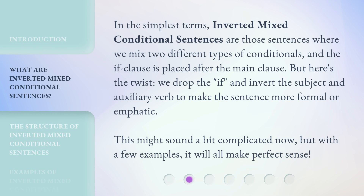In the simplest terms, Inverted Mixed Conditional Sentences are those sentences where we mix two different types of conditionals, and the if clause is placed after the main clause. But here's the twist: we drop the 'if' and invert the subject and auxiliary verb to make the sentence more formal or emphatic. This might sound a bit complicated now, but with a few examples, it will all make perfect sense.